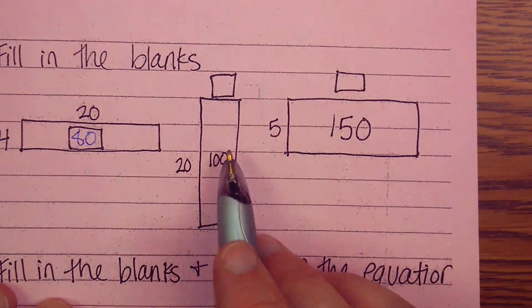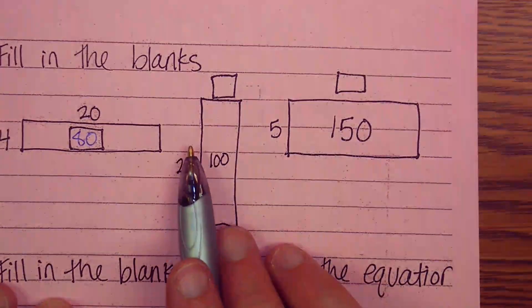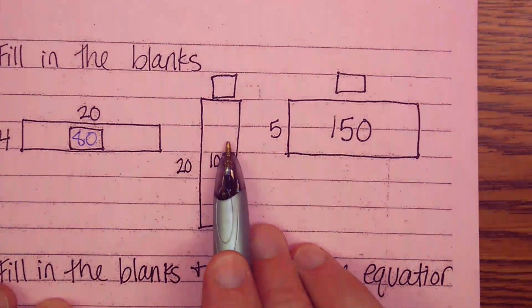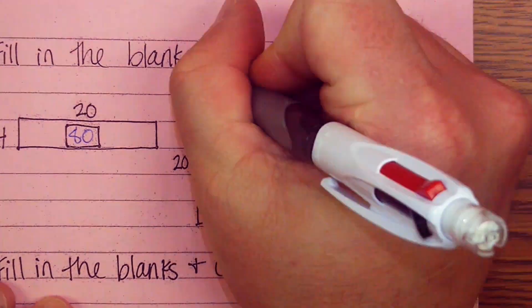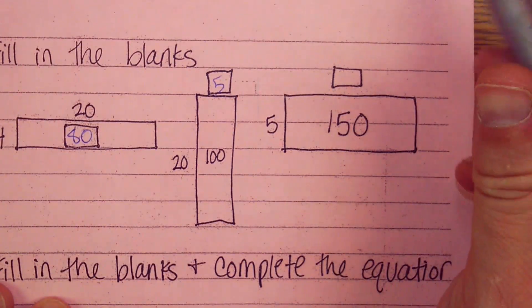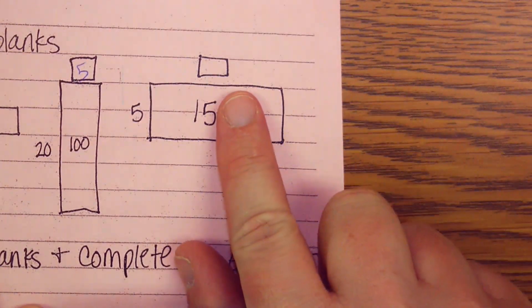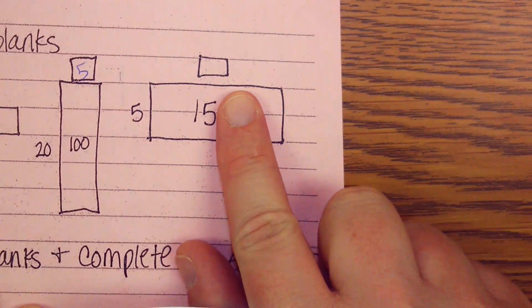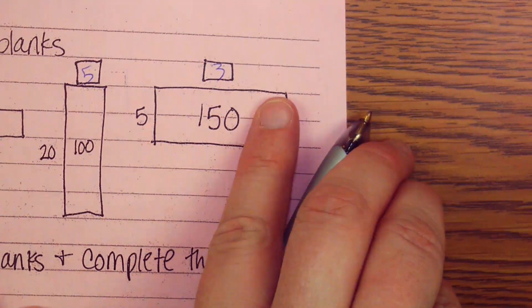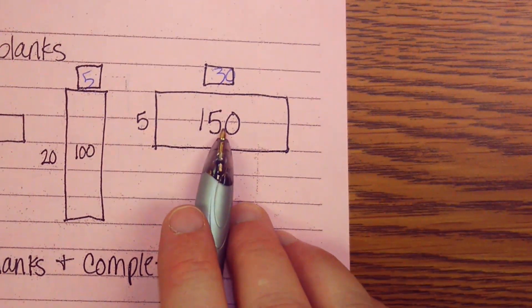20 times something is 100. So you could count by 20s: 20, 40, 60, 80, 100. You could get rid of one 0, make that a 2 and make that a 10. 2 times what is 10? 5. A couple different ways you could think of this one. 5 times something is 150. Get rid of that 0. 5 times 3 is 15. Put the 0 back on. 5 times 30 is 150.